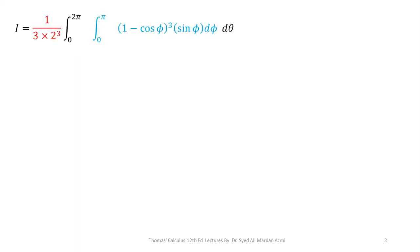Making the simplification we have 1/(3 × 2³) outside of the integral and we are left with (1 - cos φ)³ times sin φ.